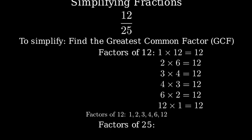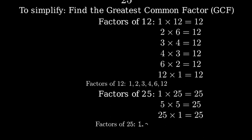Now let's find the factors of 25. 1 × 25 = 25, 5 × 5 = 25, and 25 × 1 = 25. So the factors of 25 are 1, 5, and 25.